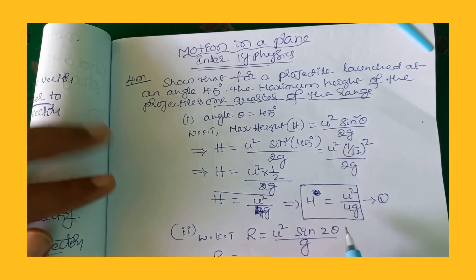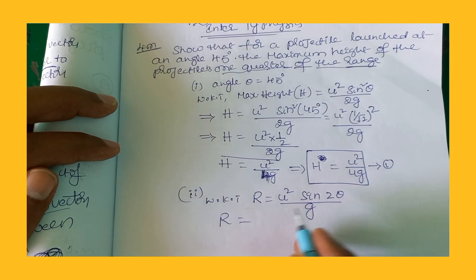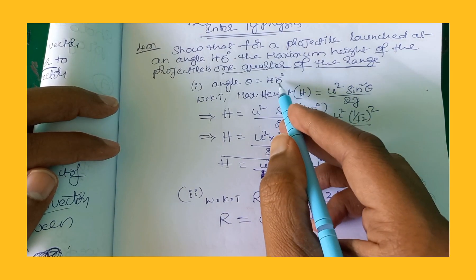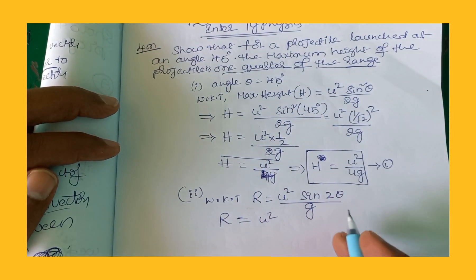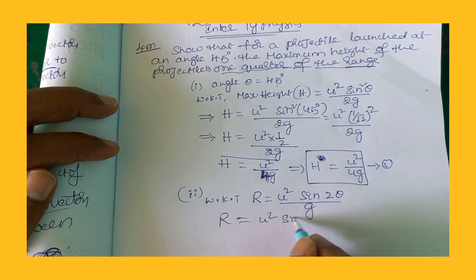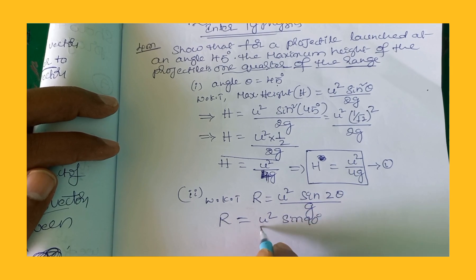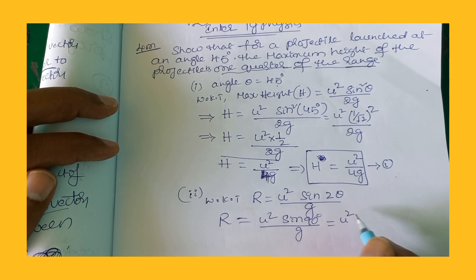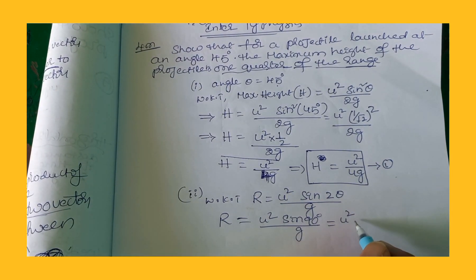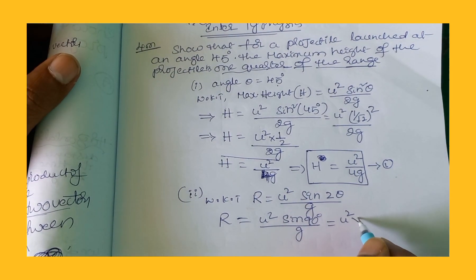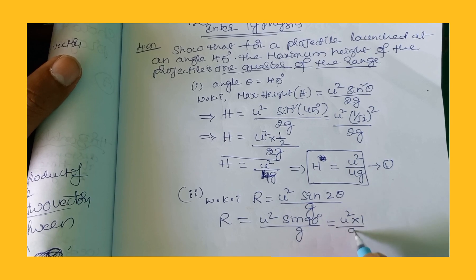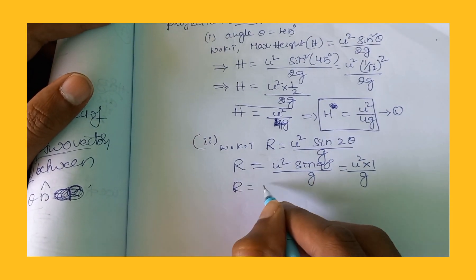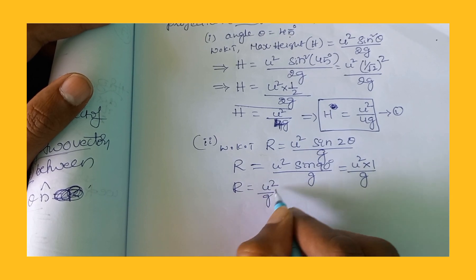Substituting theta equals 45 degrees: 2 theta equals 90 degrees, so it becomes u squared times sine 90 degrees divided by g. Since sine 90 equals 1, R equals u squared by g. This is equation number 2.